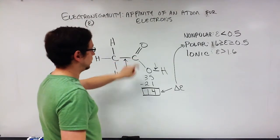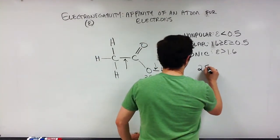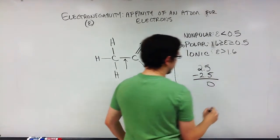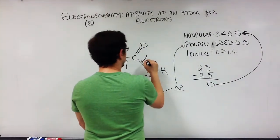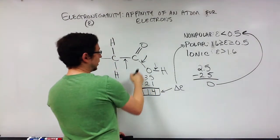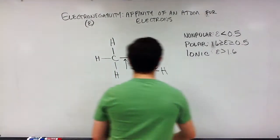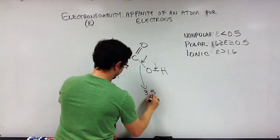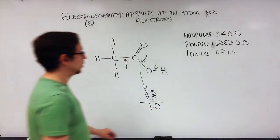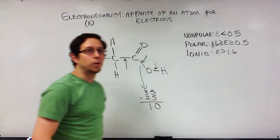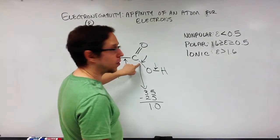If we look at two carbons, each has an electronegativity of 2.5. So 2.5 minus 2.5 gives 0, which falls in the nonpolar range. Now let's look at carbon and oxygen: oxygen has an electronegativity of 3.5, carbon has 2.5. So 3.5 minus 2.5 gives 1.0, which falls between 0.5 and 1.6 — meaning the carbon-oxygen bond is a polar covalent bond.